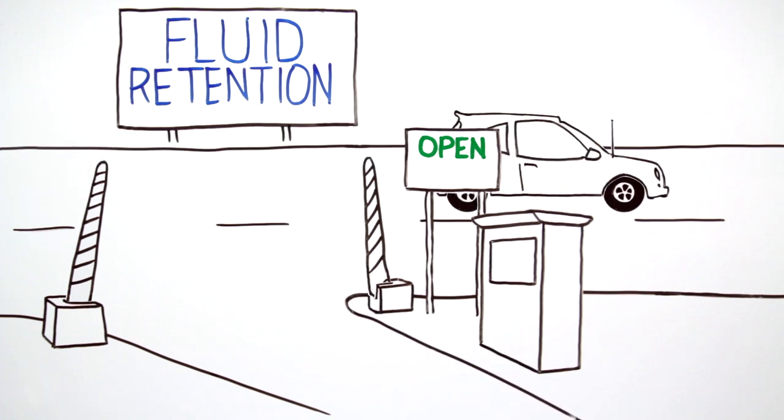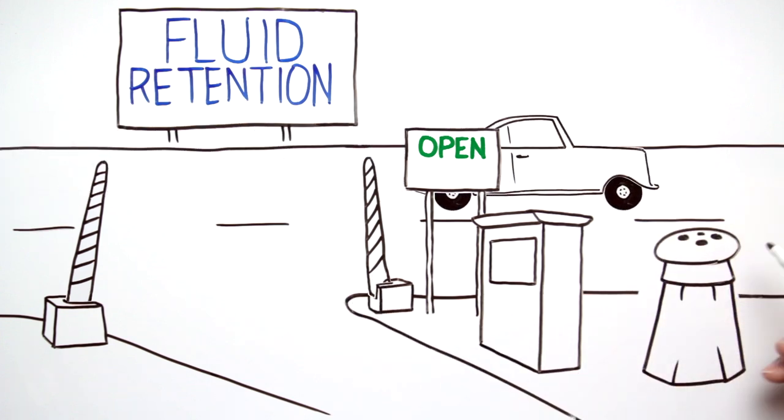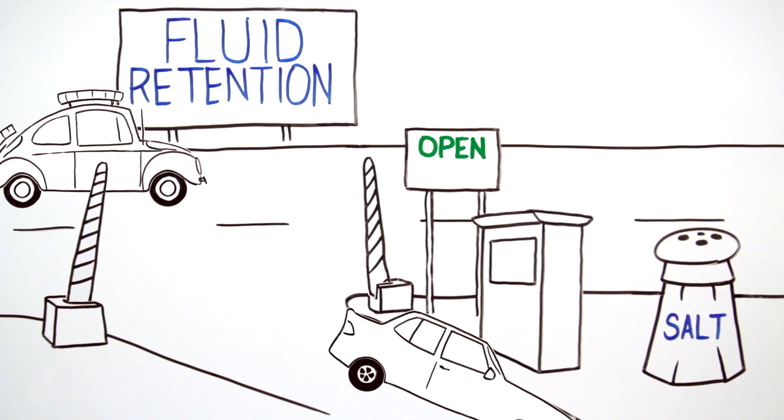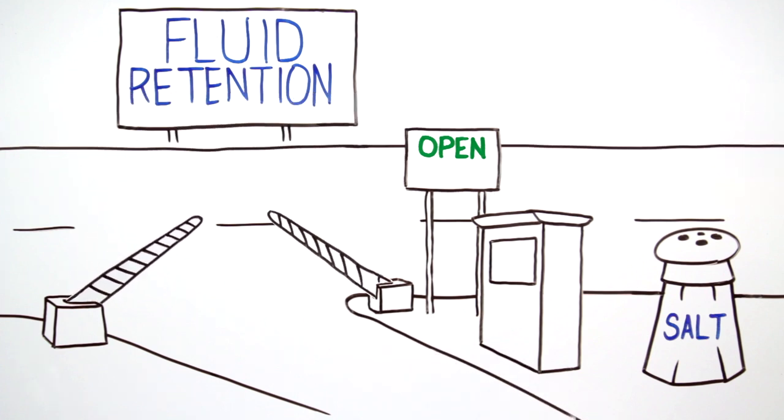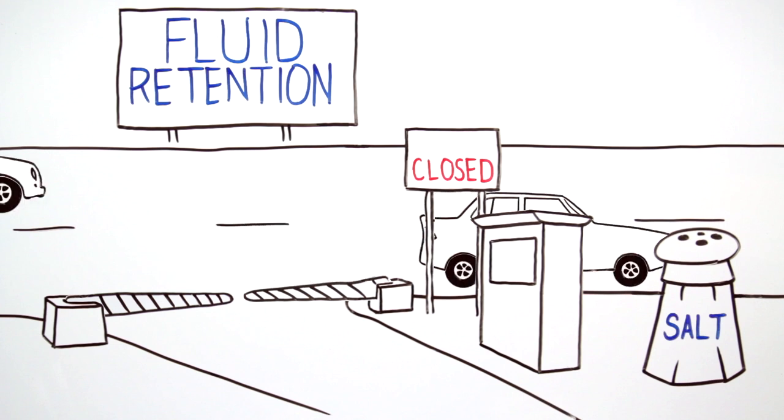The final phase of fluid replacement is retention, which involves keeping fluid in the body to allow for rehydration. Salt intake is important in this phase because it's the primary electrolyte in the blood. It helps maintain blood sodium levels and tells the kidneys to retain rather than excrete the fluid ingested.